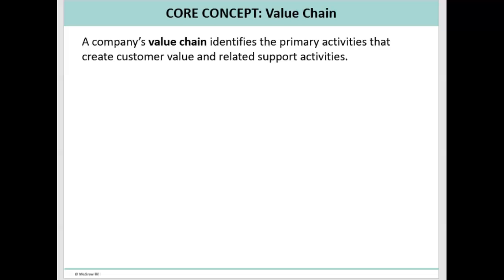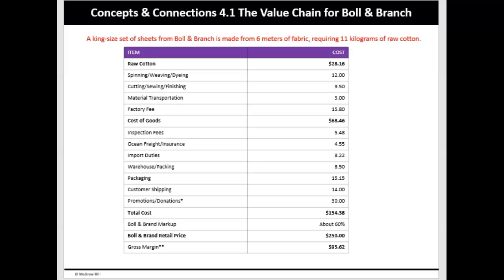How each activity is performed may affect the company's relative cost position as well as its ability to differentiate itself. Even a simple comparison of how rivals' value chains differ can reveal competitive differences. This picture from the book about the value chain shows the representative costs for various activities performed by Boll and Branch — they make luxury linens and bedding sold directly to customers online. You've maybe seen their TV commercials.